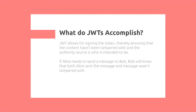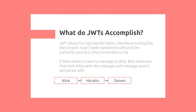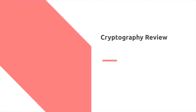JSON Web Tokens allow for signing the token, ensuring that the content hasn't been tampered with and the authority source is who it's intended to be. If Alice needs to send a message to Bob, Bob will know that Alice sent the message and that the message hasn't changed — so nobody in the intermediaries has tampered with it, and no man-in-the-middle attack has occurred.